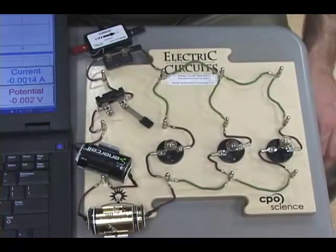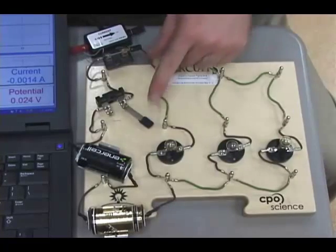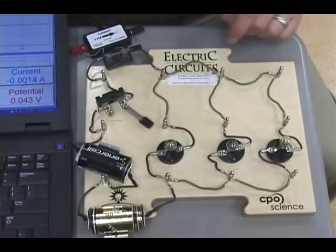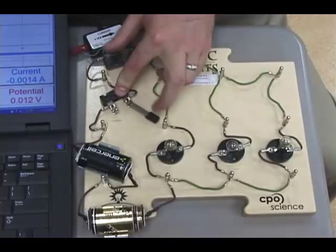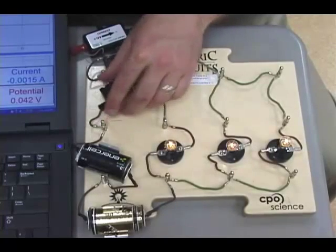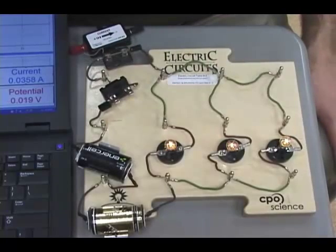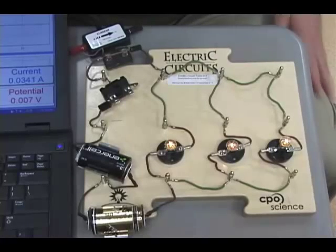This is a parallel circuit. Now, why aren't the lightbulbs lit? Because I have an open circuit, but if I close my switch, what do you notice about the lightbulbs compared to a series circuit? They seem to be burning a lot brighter. I wonder why that is.